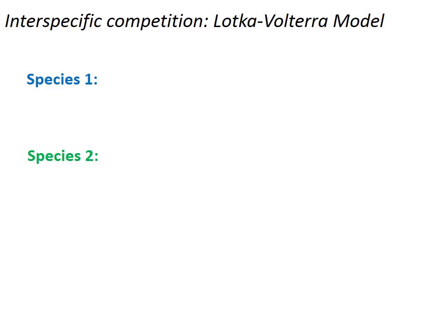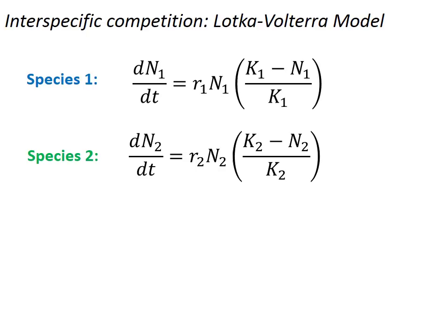So let's begin by considering two separate equations to describe the logistic growth of two hypothetical species. Throughout this presentation, I'll be representing species 1 by blue and species 2 always by green. Now, the variables in these equations haven't changed. K is still the carrying capacity, r is still the intrinsic rate of increase, and n is still the current population size.